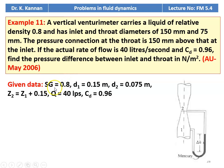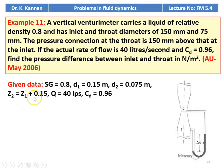We are given: specific gravity of the flowing fluid is 0.8, inlet diameter D1 equals 0.15 meter, D2 equals 0.075 meter. The throat position Z2 is 150 millimeters, which is 0.15 meter above the inlet. So Z2 equals Z1 plus 0.15. Q equals 40 LPS, and CD equals 0.96.